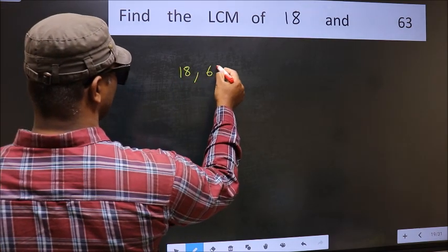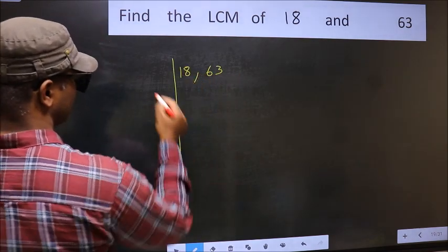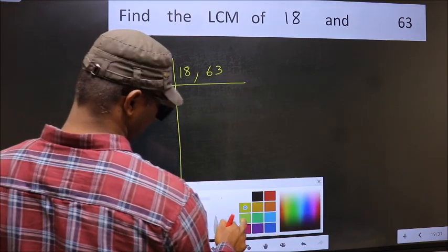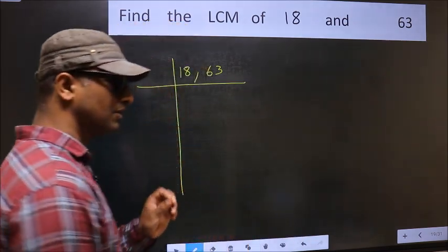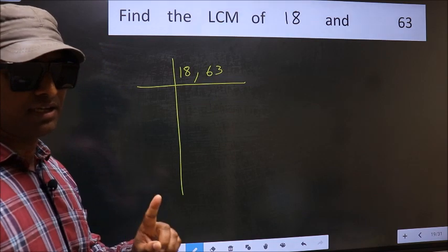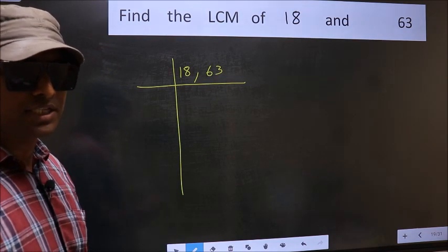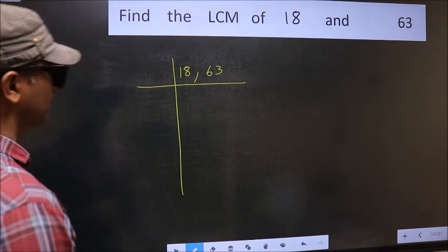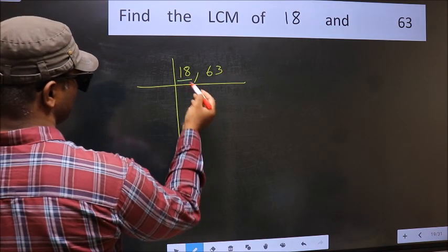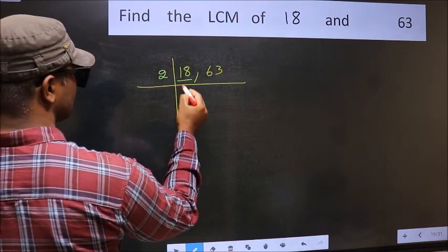18, 63. This is your step 1. Now you should focus on the first number which is 18 here. 18 is 2 nines.